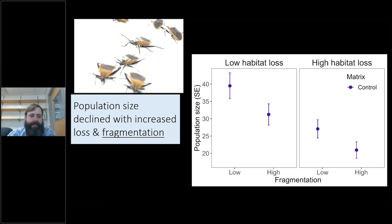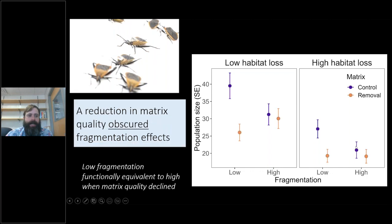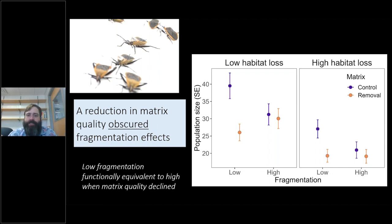What did we see? Population size decreases with both loss and fragmentation — you need to consider both. This graph on the right shows population size with a nice step down as you go to high fragmentation and high loss, getting increasingly worse for adults. However, when you look at landscapes where we've removed everything between the cactus, it obscures the effect of fragmentation — you would say there's no effect of fragmentation. What's likely happening is that in some landscapes the matrix is much more important, and it obscures the fragmentation effect, which is likely what's driving this debate currently in the literature.